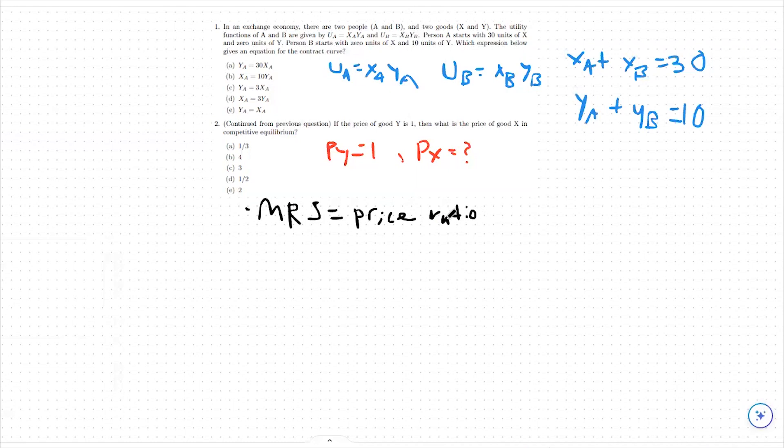Especially with these Cobb-Douglas type questions, we're always setting our marginal rate of substitution equal to our price ratio.